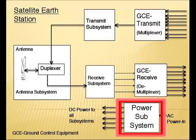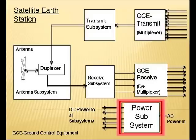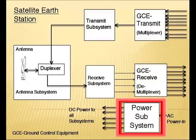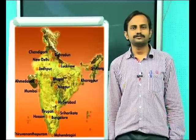The final block of the earth station is the power subsystem, which supplies power to the equipment. The primary source of power is the standard AC power lines. The output will be various DC power levels depending on the system need. It also consists of emergency power sources such as diesel generators, batteries, and inverters to ensure continuous operation during power failures.